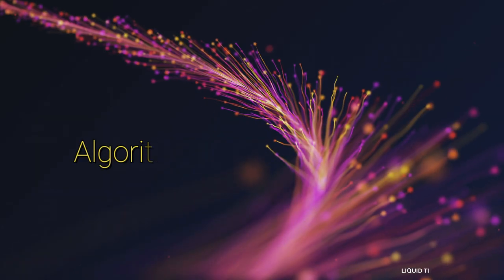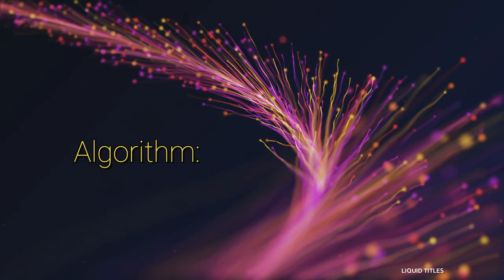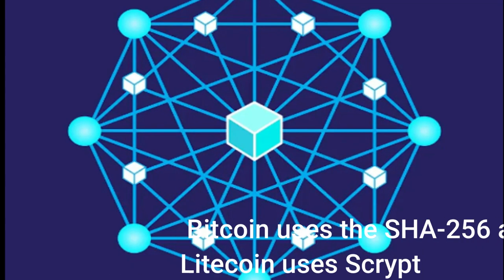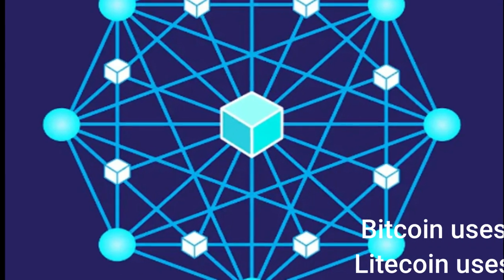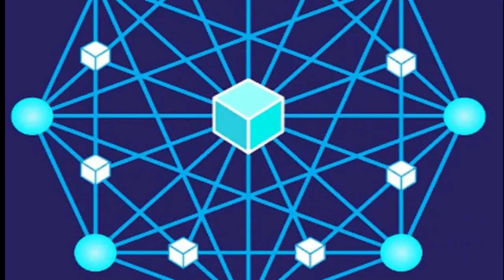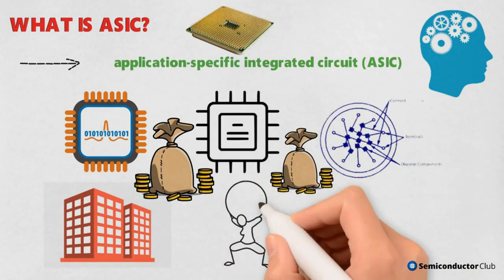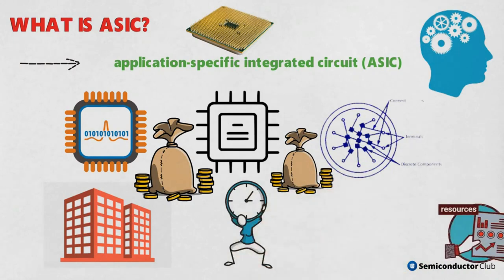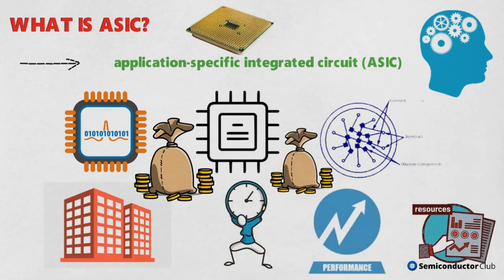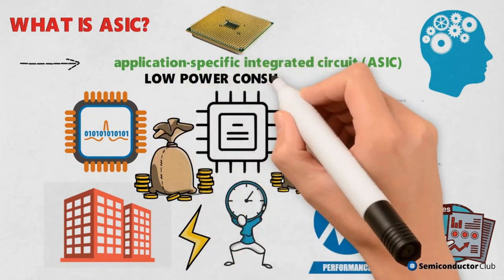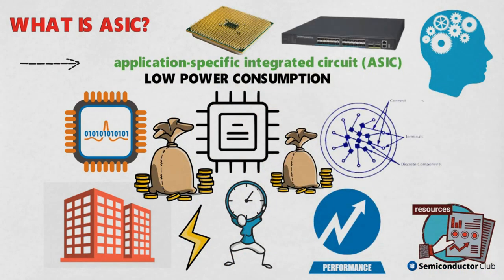Algorithm: One of the key differences between Litecoin and Bitcoin is the hashing algorithm they use. While Bitcoin uses the SHA-256 algorithm, Litecoin uses SCRYPT. SCRYPT is considered to be more memory-intensive, designed to resist the use of ASIC (application-specific integrated circuit) miners, and promote more widespread participation through standard computer hardware.